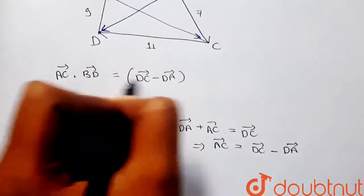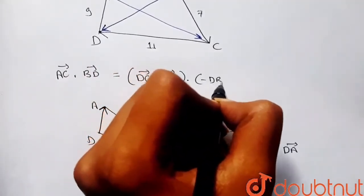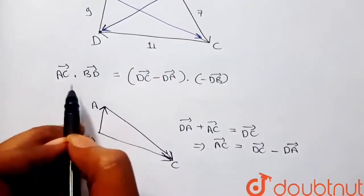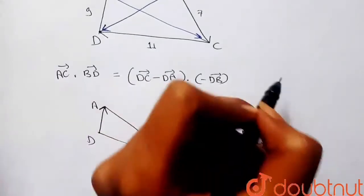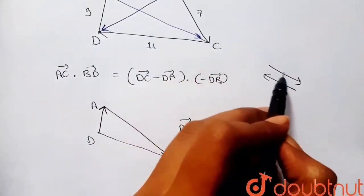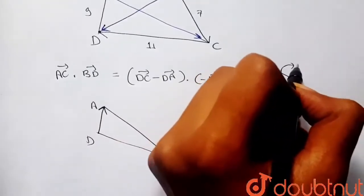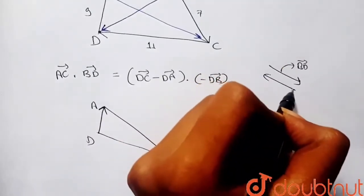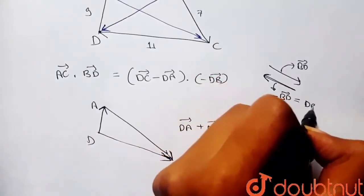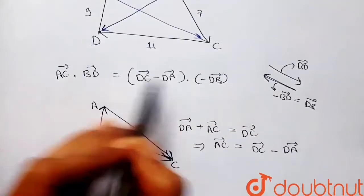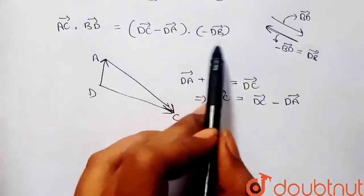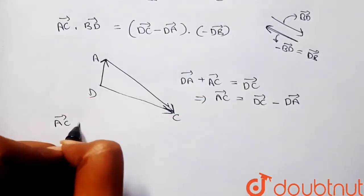Let's put this value of AC. I can write vector AC as vector DC minus vector DA. I can write vector BD as minus vector DB, because when we rotate a vector by 180 degrees a minus sign comes in. If vector BD is in one direction, vector DB will be in the opposite direction. So vector BD equals minus vector DB.